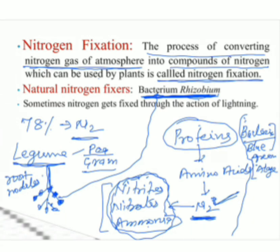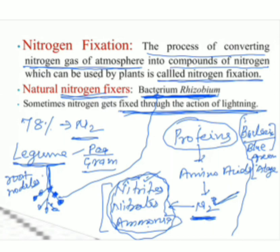Animals use the protein synthesized by plants. Additionally, atmospheric nitrogen is also fixed by the action of lightning. Lightning converts atmospheric nitrogen into nitrates and ammonia, which mix with soil and plants take these compounds from soil. So bacteria, blue-green algae, and lightning are called natural nitrogen fixers.